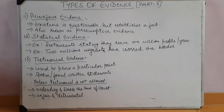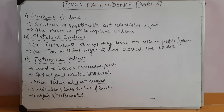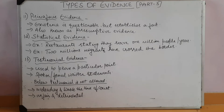The 12th type is statistical evidence. Statistical evidence refers to the data which people search or investigate for the purpose of proving a particular point. Such evidence measures the strength of the evidence. For example, restaurants stating the fact that they serve 1 million people per year, or 2 million migrants have crossed the border.